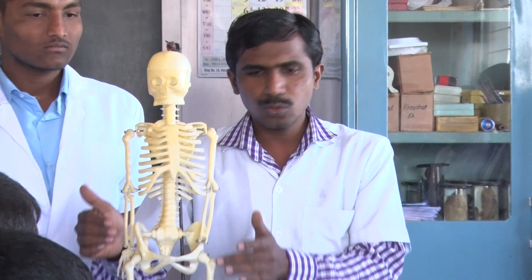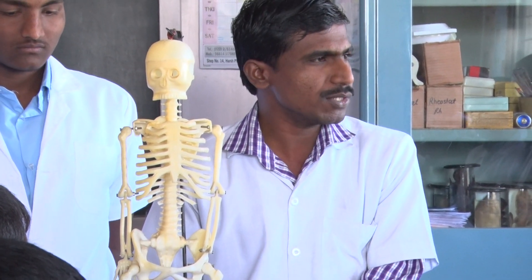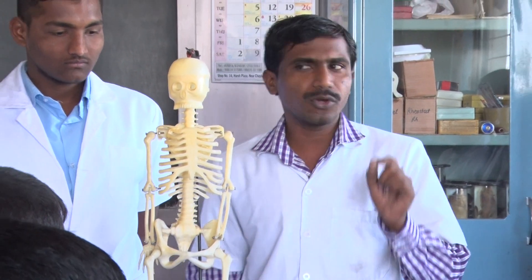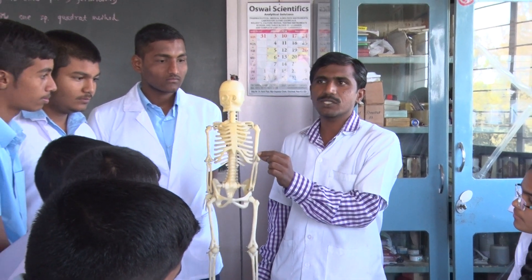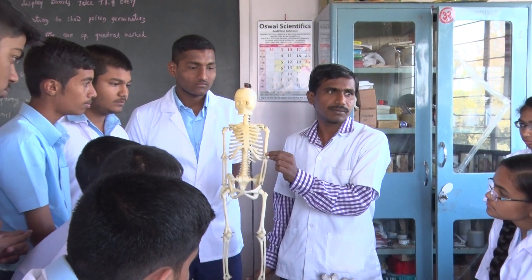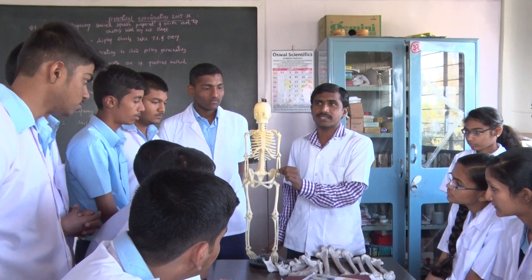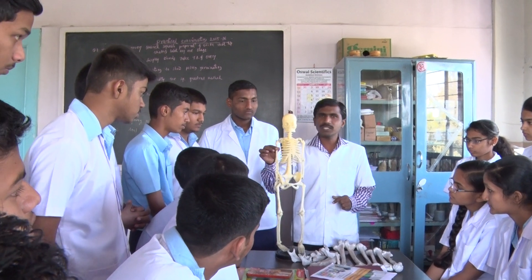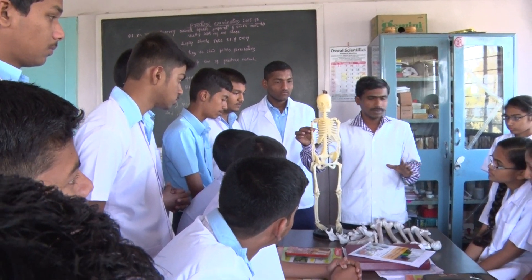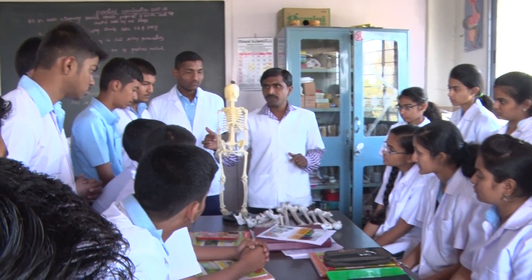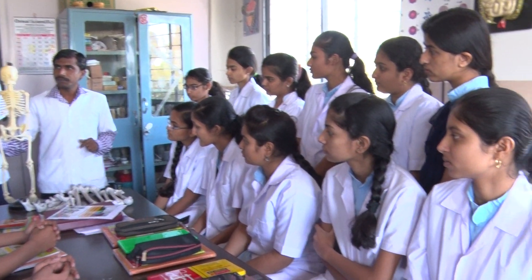Now these are the two forelimbs and these are the two hind limbs. Four limbs have two different parts. These are the part called the humerus and these are the part called the radius and ulna. And these are the metacarpal.